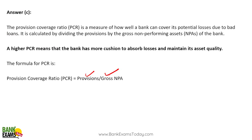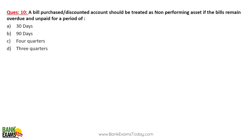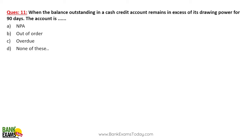A bill purchased or discounted should be treated as NPA if it remains overdue or unpaid for a period of 90 days. When the balance outstanding in a CC account remains in excess of drawing power for more than 90 days, it becomes out of order.